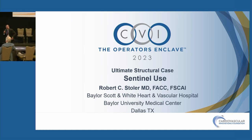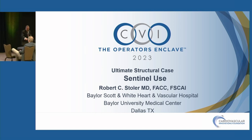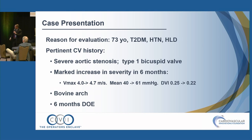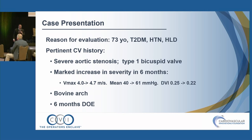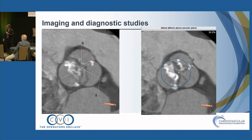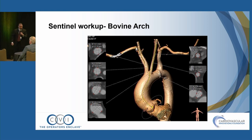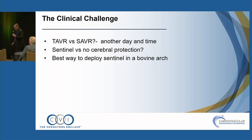Not a very controversial topic. Here are my disclosures. Here's the case: 73-year-old diabetic, hypertensive patient with severe aortic stenosis, type 1 bicuspid valve. The mean gradient went from 40 to 61 with a drop in DVI over the last six months, mildly symptomatic. He has a bovine arch and fits for cerebral protection if we want. The clinical challenges are: open versus transcatheter valve — that's a two-hour discussion for another day — and Sentinel versus no cerebral protection, and if you decide to use cerebral protection, what's the best way in a bovine arch?